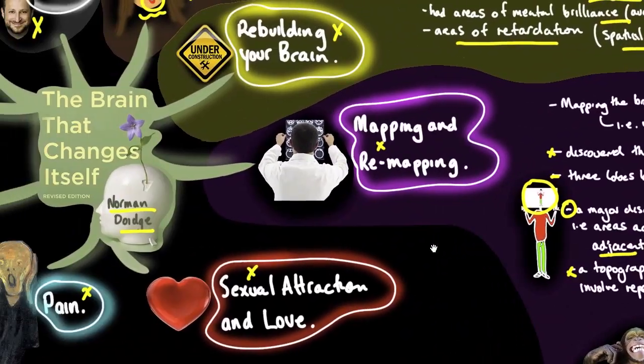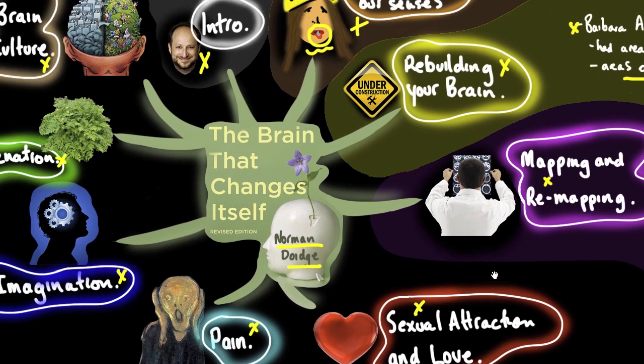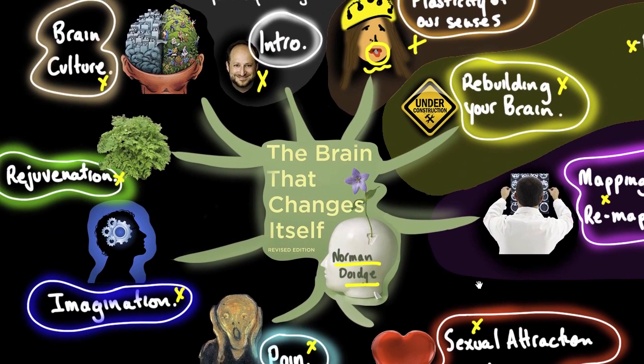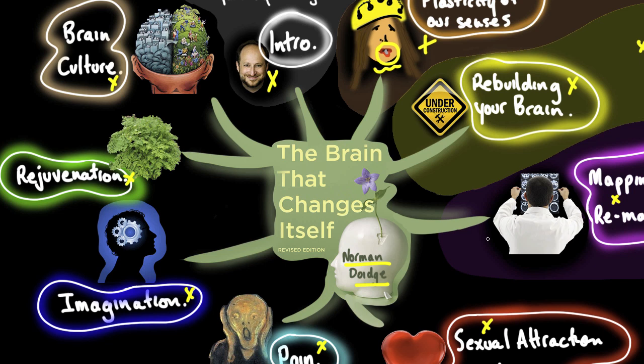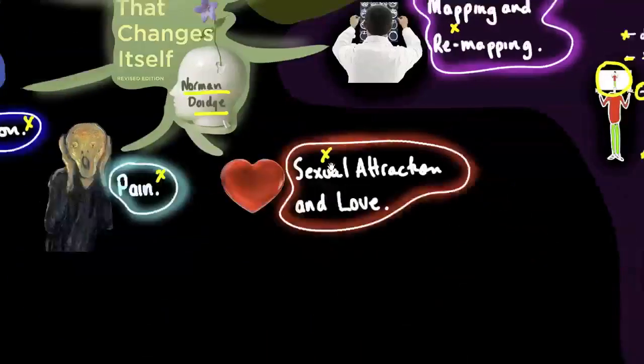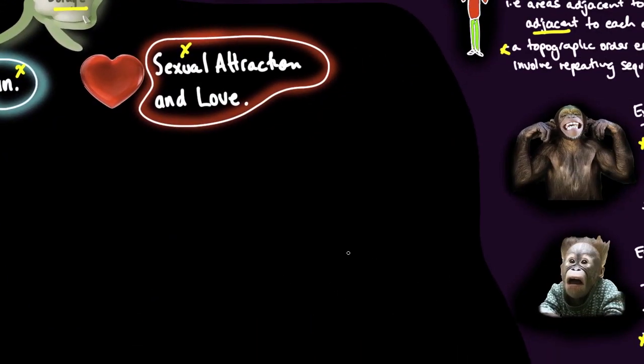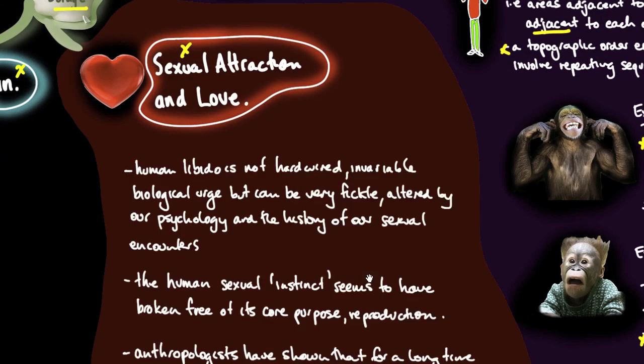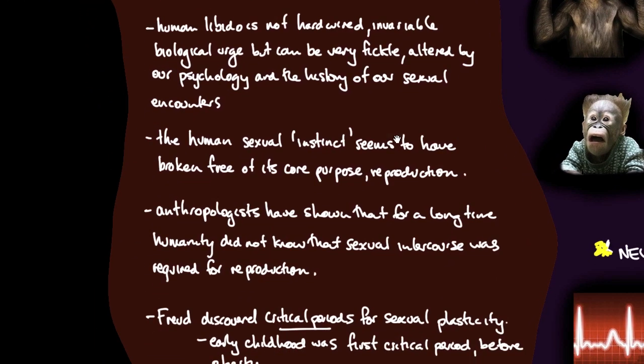That's mapping and remapping. It's one of the more important topics because it covers a lot of what the science is and how we've learned that through the process of mapping. So the next topic: sexual attraction and love and how that relates to the brain and brain plasticity. Really, this is just a grab bag of ideas from the book.